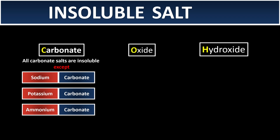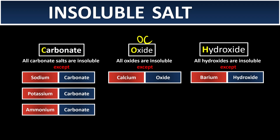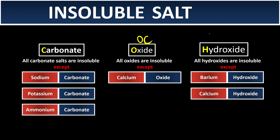All oxides are insoluble except calcium oxide — remembered as 'my only children, OC' (only calcium). All hydroxides are insoluble except barium hydroxide and calcium hydroxide — remembered as 'HSBC International Bank' or 'her chicken burger,' meaning Ba and Ca are the exceptions. Note that sodium hydroxide, potassium hydroxide, and ammonium hydroxide are also soluble — and they are alkaline.